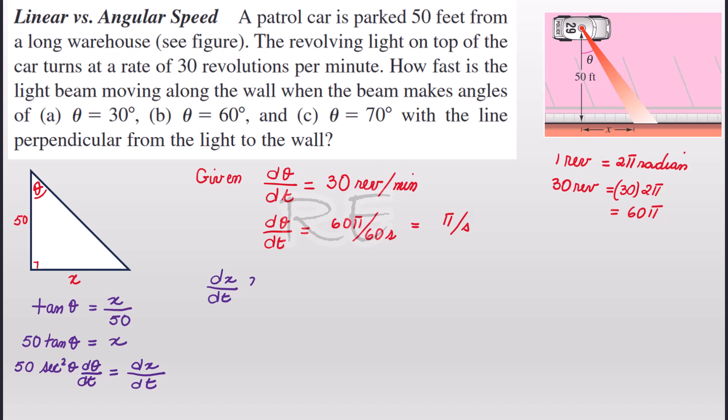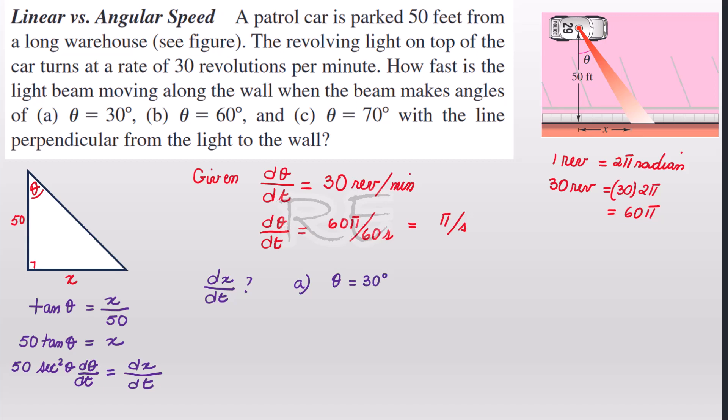They're asking us for the rate at which the light beam is moving along the wall, so it's dx/dt when the angle is 30 degrees. So we need to use our formula, the formula that we found. So dx/dt for θ equal to 30 degrees will be 50 feet times sec² 30° times π radians per second.